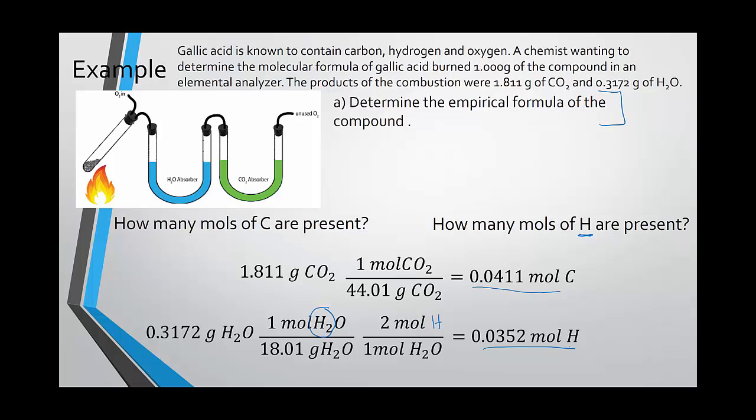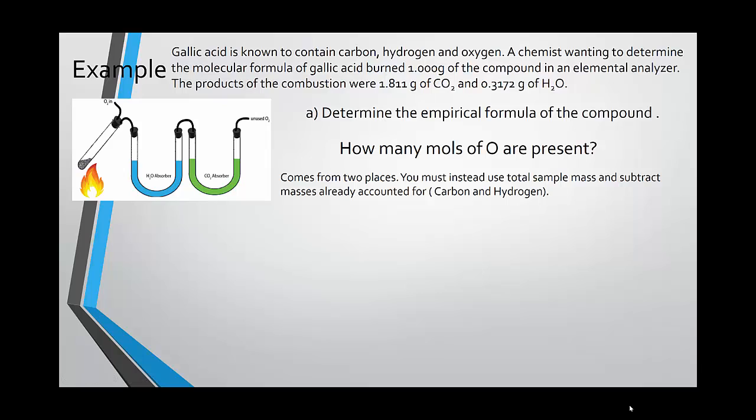Now we're getting closer and closer to those previous examples that we have done of this problem. We have our moles of carbon, we have our moles of hydrogen. All that's left is to find our moles of oxygen. To find our moles of oxygen, we can't simply use the moles of oxygen from both the carbon dioxide and from the water. We aren't able to do this because a significant portion of that oxygen actually comes from the oxygen that is reacting with the hydrocarbon. We don't know how much of it comes from which species, since there's no way of telling the difference between the two.